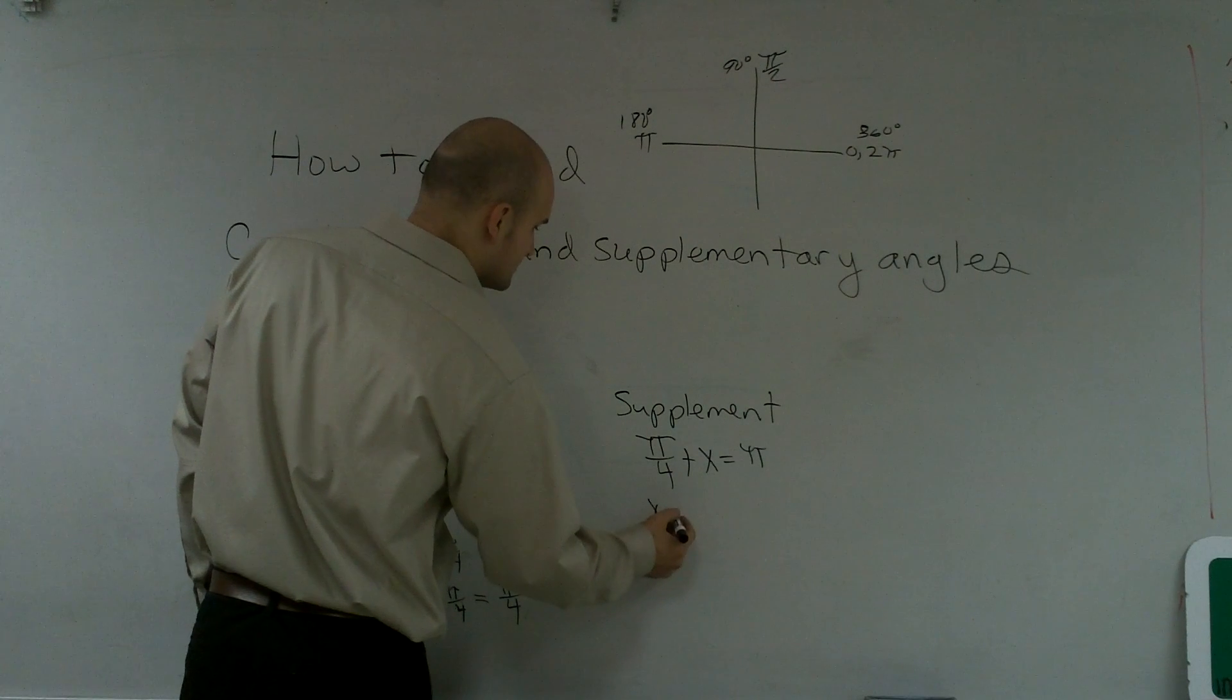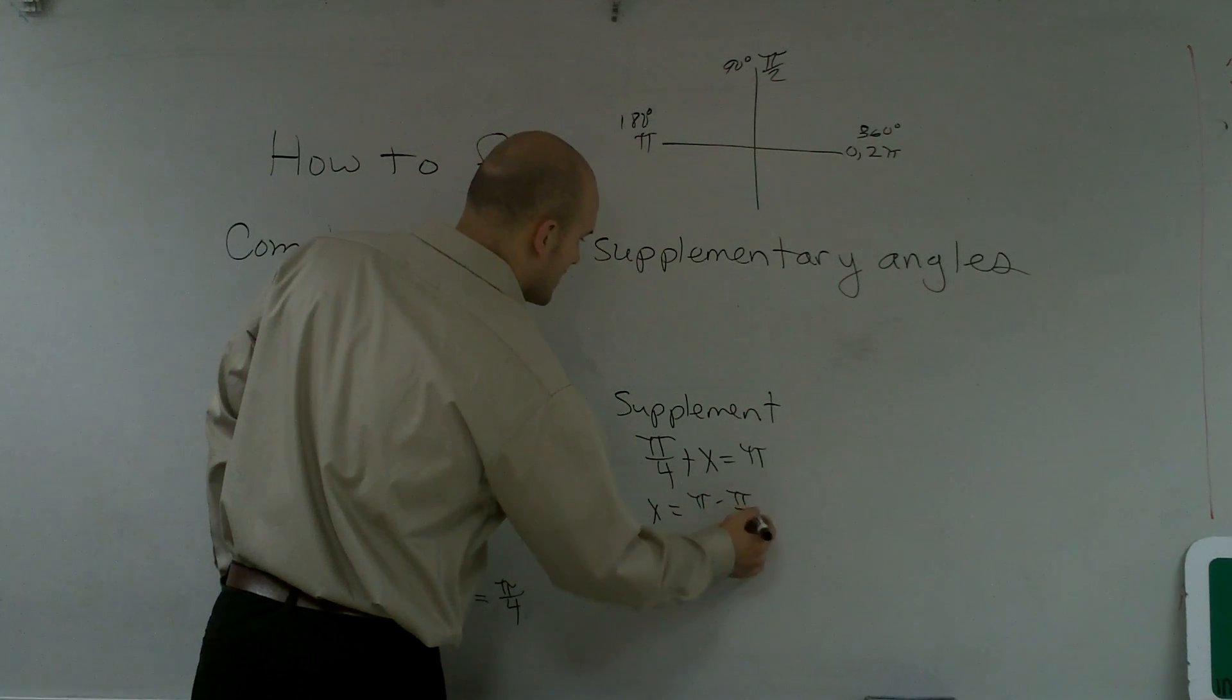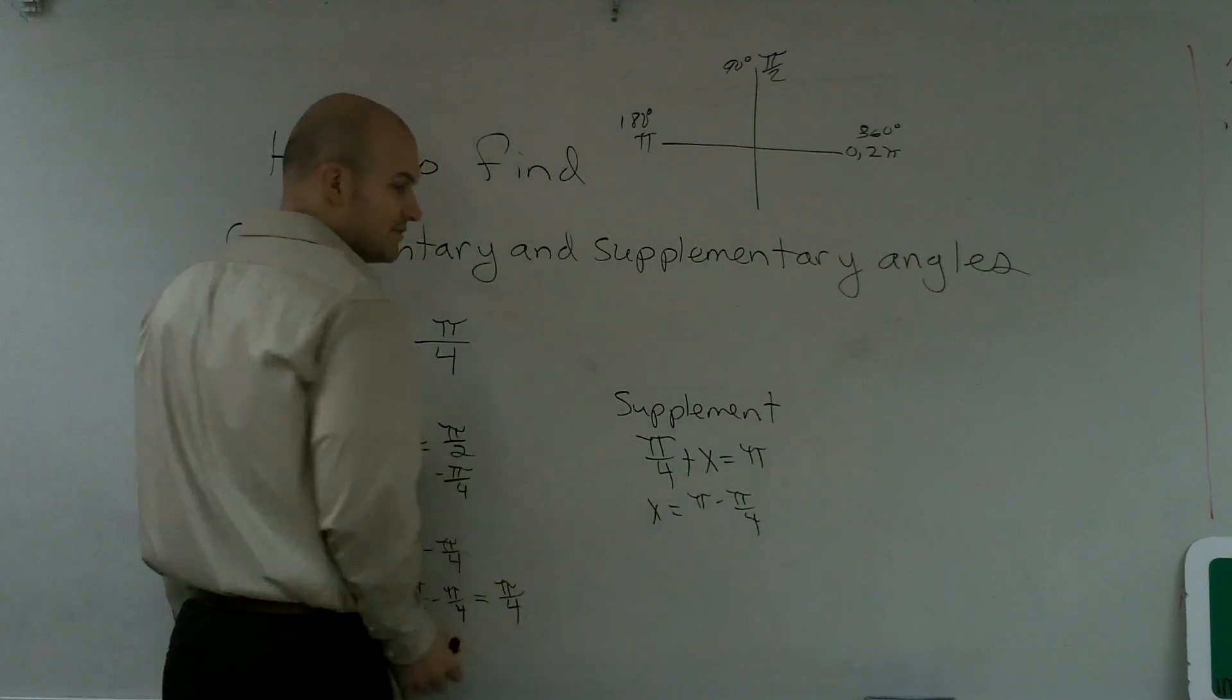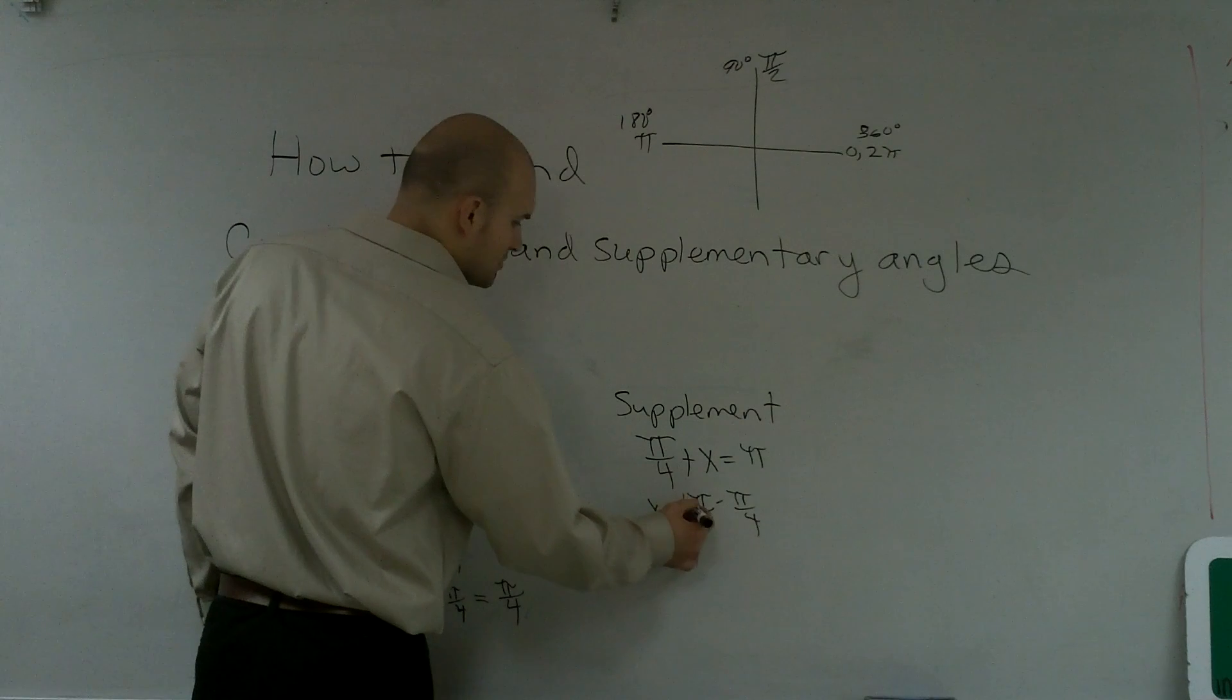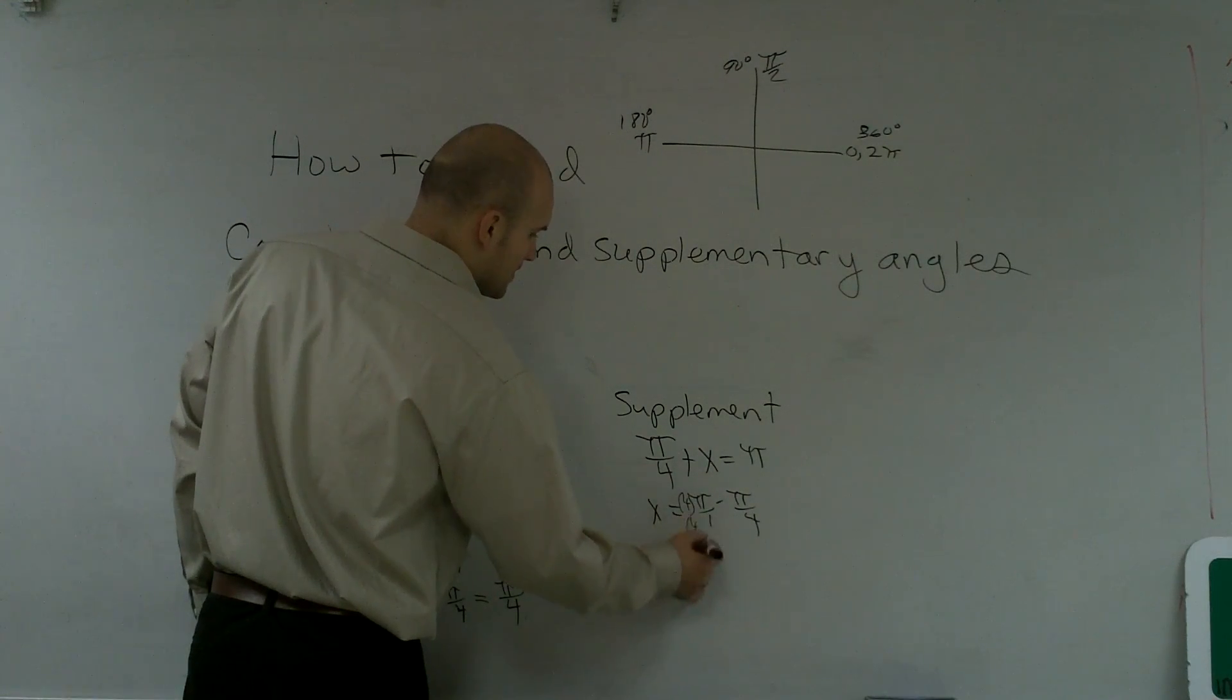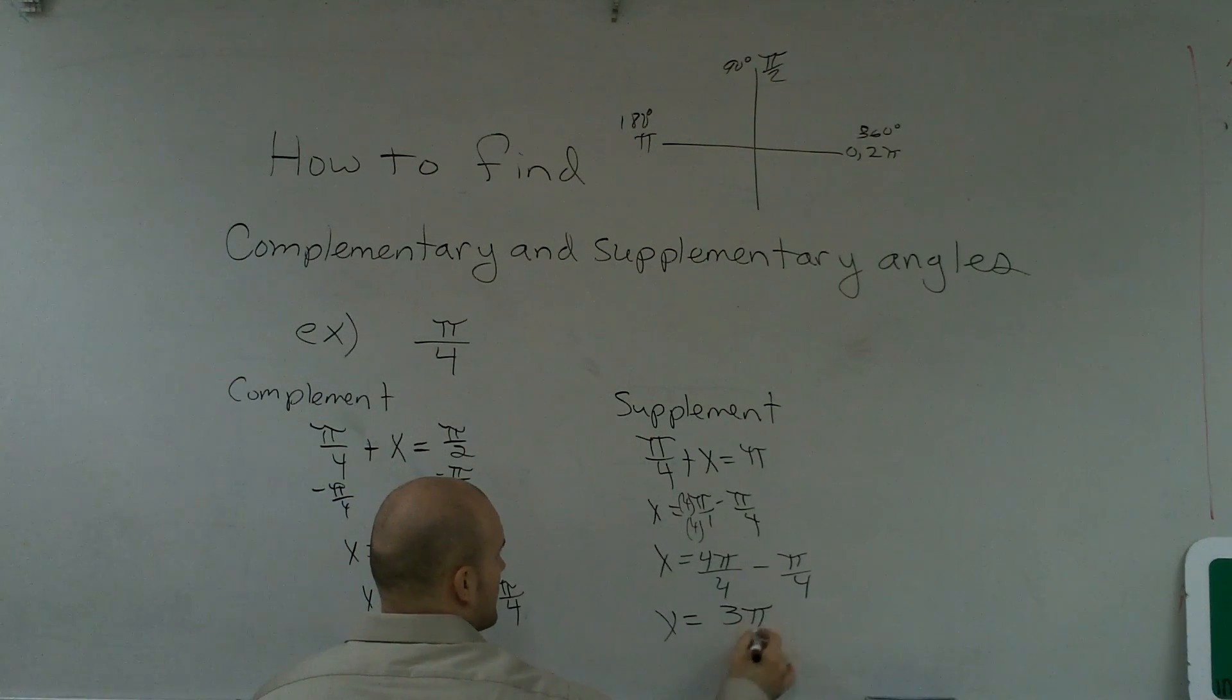Again, I do not have a denominator here. I'm going to make my denominator 1, multiply by 4 over 4. So, x equals 4π over 4 minus π over 4. x equals 3π over 4.